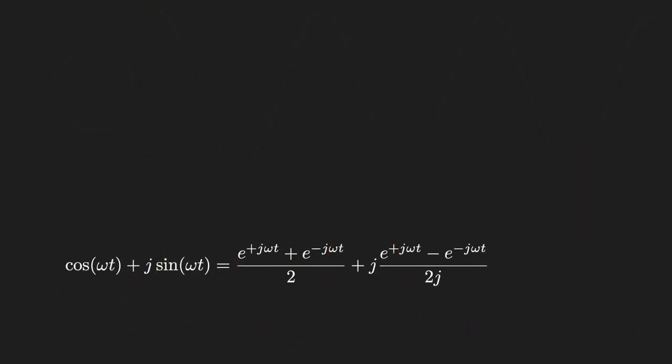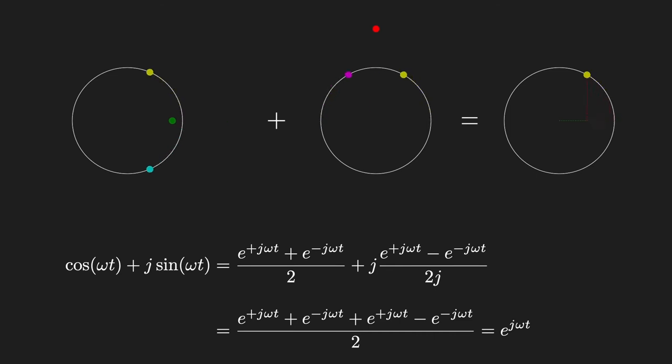And just to check our math, we can also confirm that adding the real cosine and imaginary sine parts back together returns us to a complex exponential with a single frequency. Or visually, that adding the phasers back together and dividing by two gets us back to where we started. So, the deeper examination of frequency reveals that we need both positive and negative frequencies to represent real signals, but that they are kind of equal and opposites to each other.